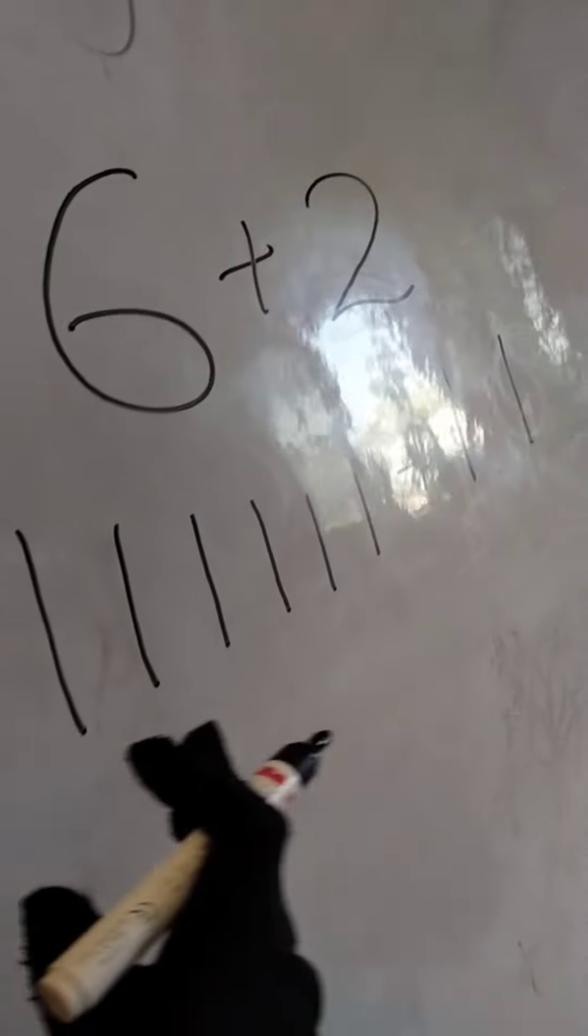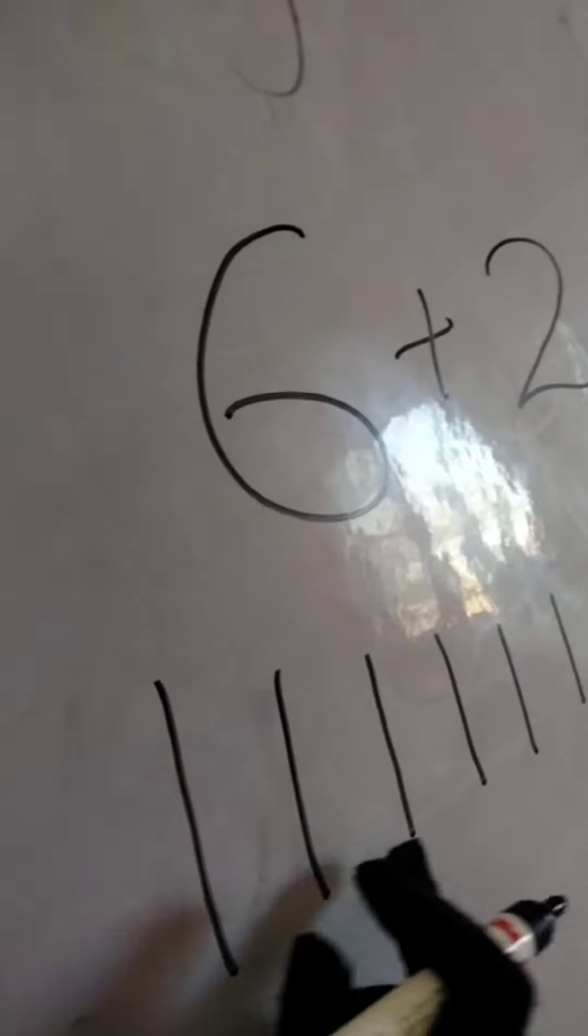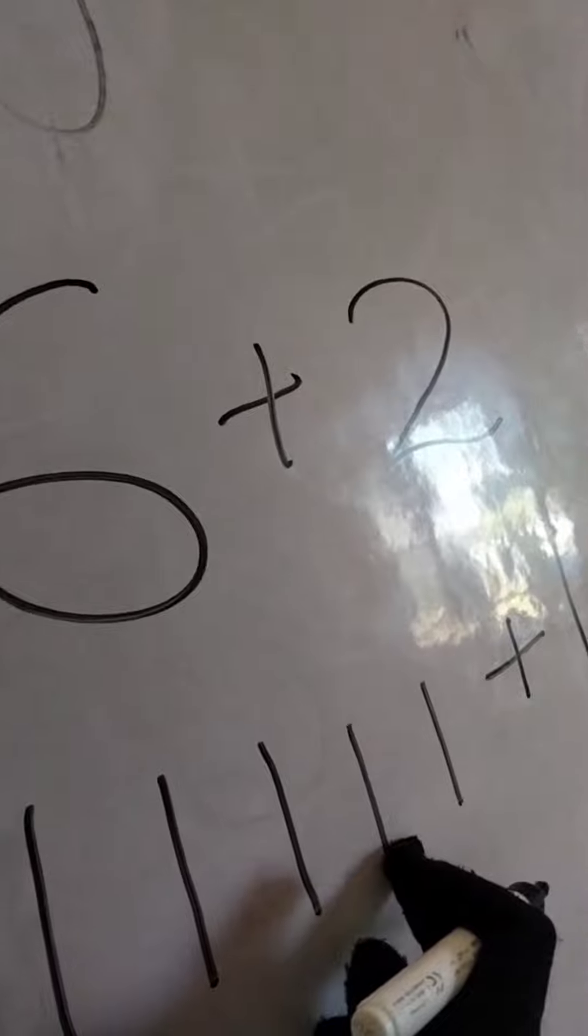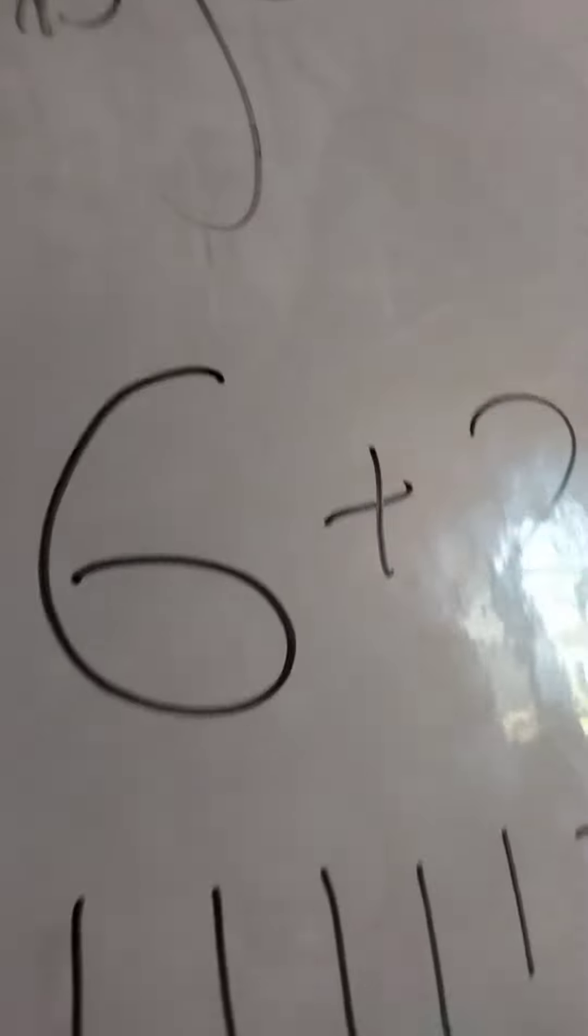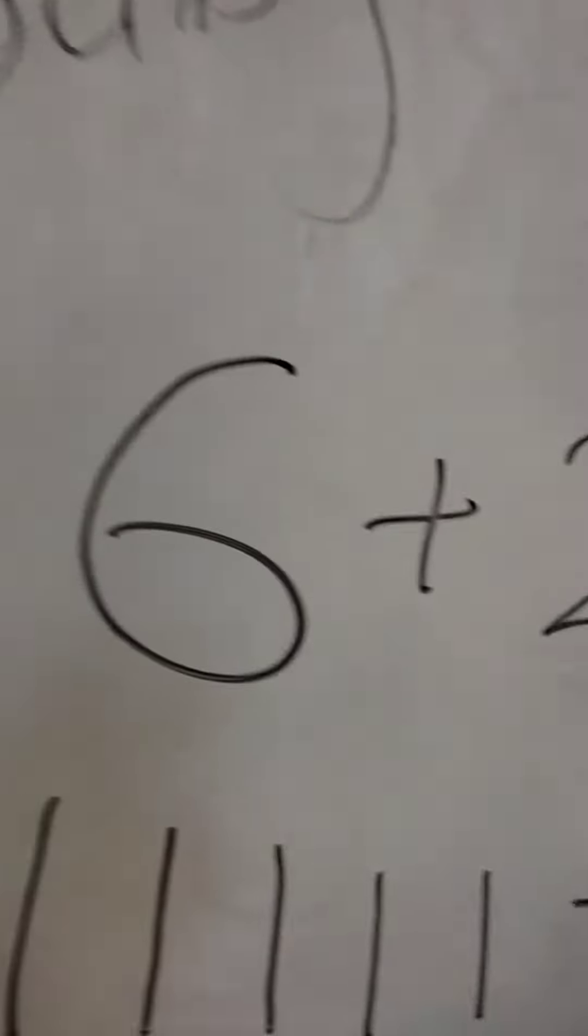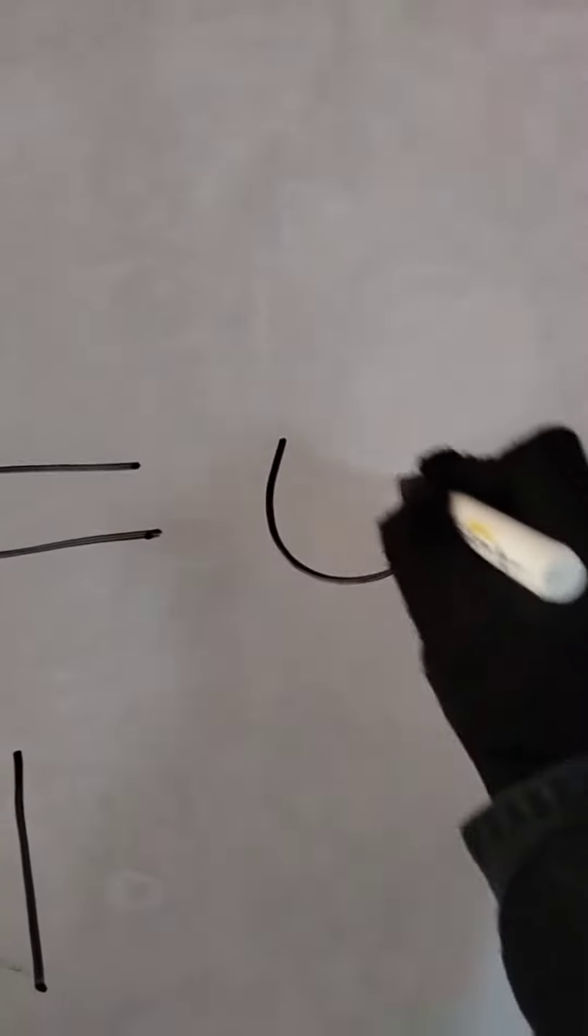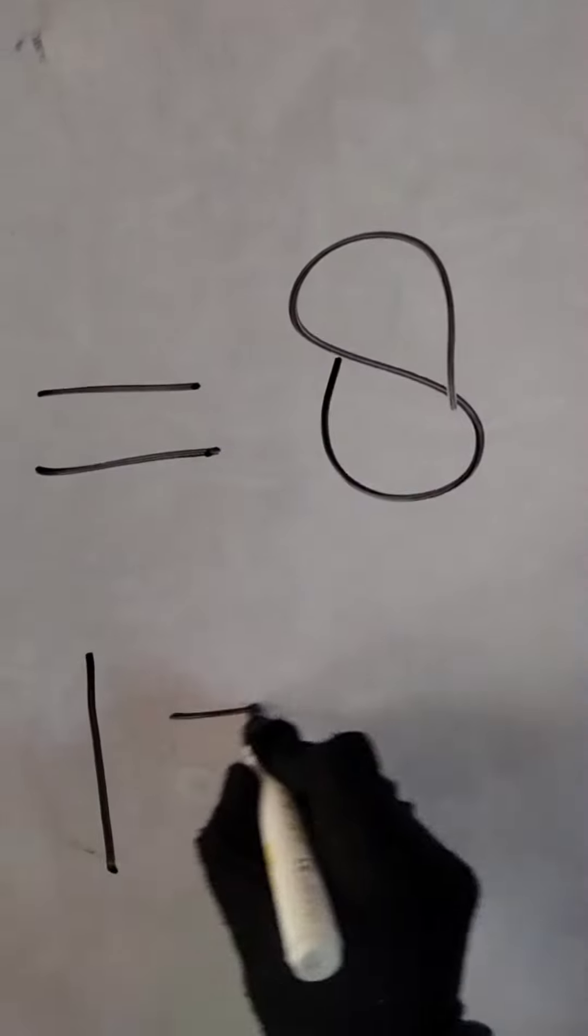Now tell me how many lines are in total? 1, 2, 3, 4, 5, 6, 7, 8. Very good. So that means 6 plus 2 is equal to? 8. Very good.